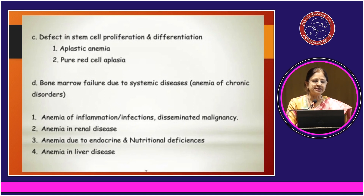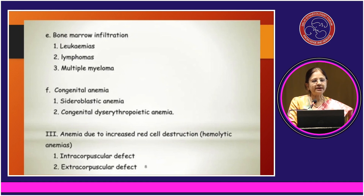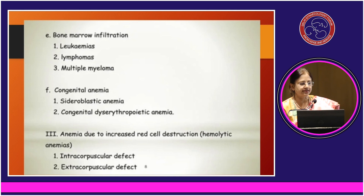It could also be a defect in stem cell proliferation and differentiation, with causes like aplastic anemia or pure red cell aplasias. Deficient production can also be due to bone marrow failure from systemic diseases like chronic inflammation, renal disease, nutritional deficiencies, and liver disease; or bone marrow infiltration like leukemias, lymphomas, multiple myelomas; or congenital dyserythropoietic anemia.